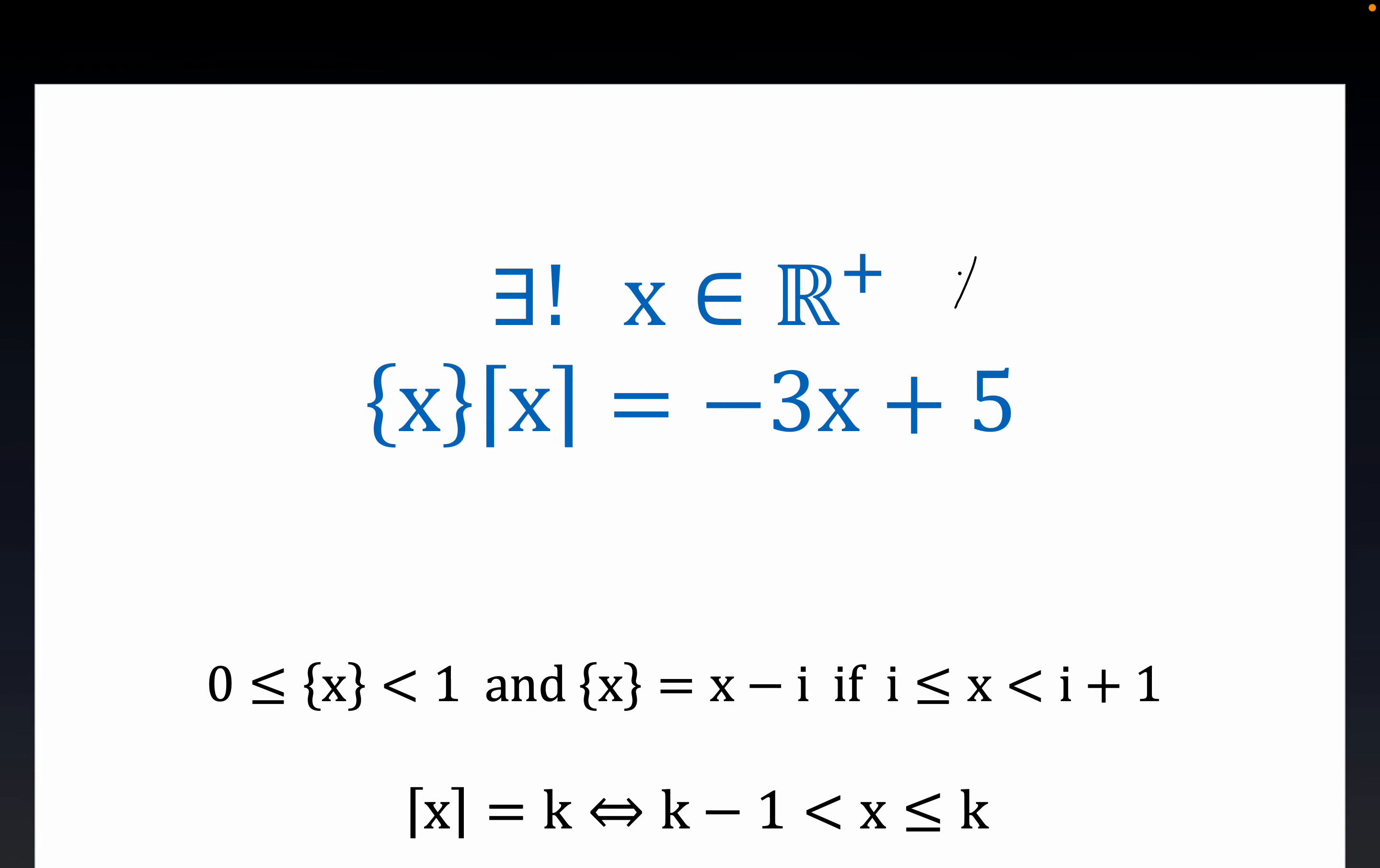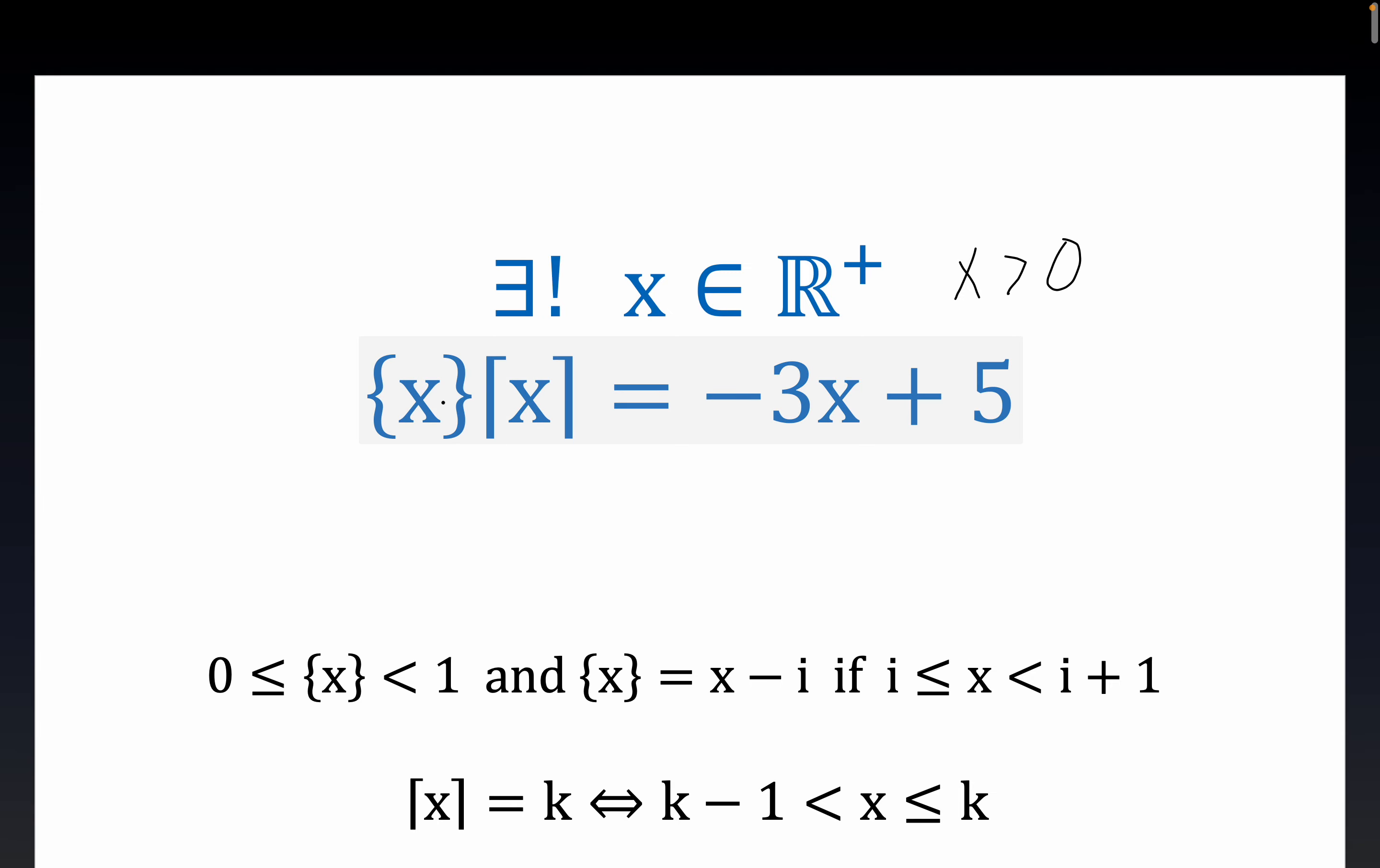Tonight we have a problem that claims there's a unique positive x such that the fractional part of x times the ceiling of x is equal to this linear function negative 3x plus 5.